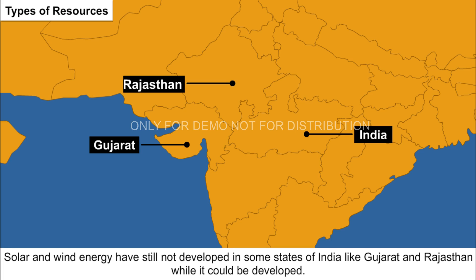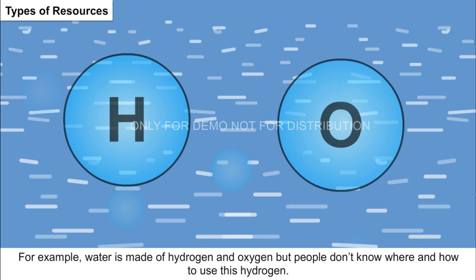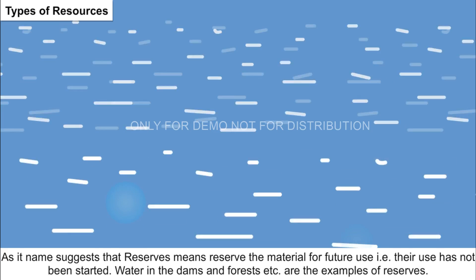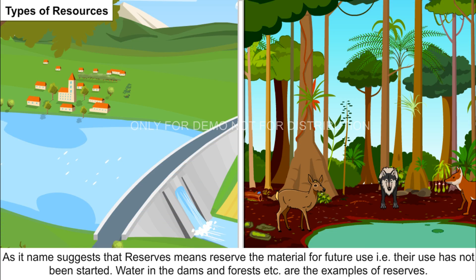Stock resources are present in sufficient quantity in our environment but we don't know the best technologies to use them. For example, water is made of hydrogen and oxygen, but people don't know how to use this hydrogen. Reserves means material reserved for future use whose utilization has not yet started — water in dams and forests are examples of reserves.